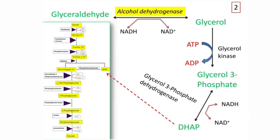In the second mechanism, glyceraldehyde is converted into glycerol by alcohol dehydrogenase. Glycerol is then converted into glycerol-3-phosphate by glycerol kinase. This glycerol-3-phosphate, by the action of enzyme glycerol-3-phosphate dehydrogenase, is converted into dihydroxyacetone phosphate (DHAP). This DHAP, an intermediate of glycolysis, is converted into glyceraldehyde-3-phosphate by triose phosphate isomerase and is metabolized by the remaining reactions of glycolysis to pyruvate.